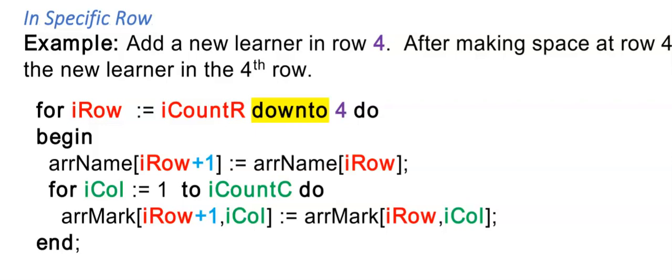So since I'm adding a new learner at a specific point, the learners are in the rows. So I will start with my for loop for my row. But this time I'm starting at the end of my array, at the bottom. And I'm looping down to the position that I want to insert this new person into.